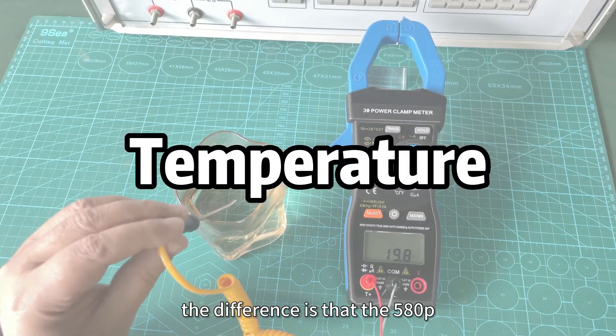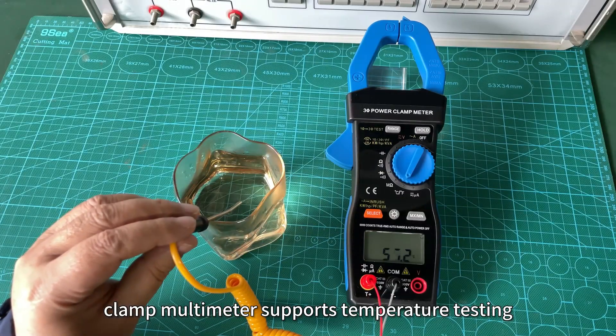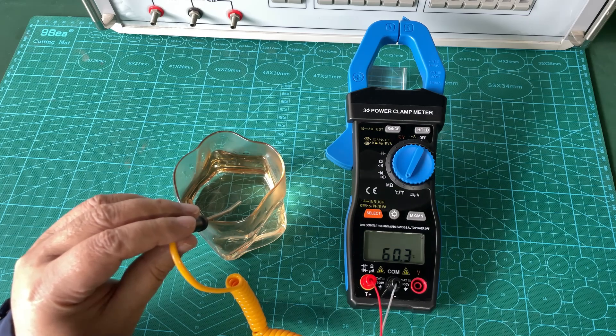The difference is that the 580p clamp multimeter supports temperature testing. Let's test it. Cool.